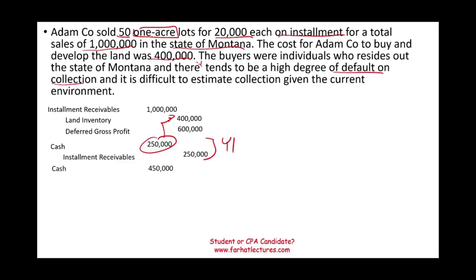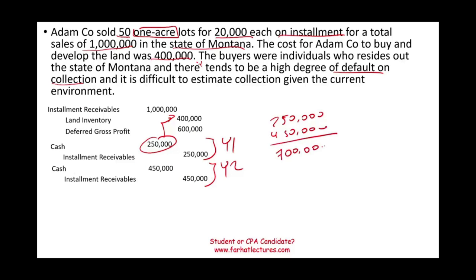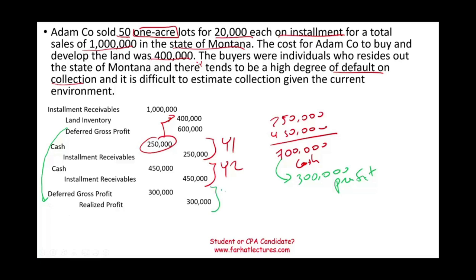In Year 2, we received cash of $450,000 — we debit cash and credit installment receivable. Now, in Year 1 we received $250,000, and in Year 2 we received $450,000, so we have received $700,000 in total cash. That means we have recovered our cost by Year 2, and $300,000 of that $700,000 can now be recognized as profit. So in Year 2, we debit deferred gross profit by $300,000 and credit realized profit for $300,000. We did not book any profit until Year 2, when we recovered our cost.